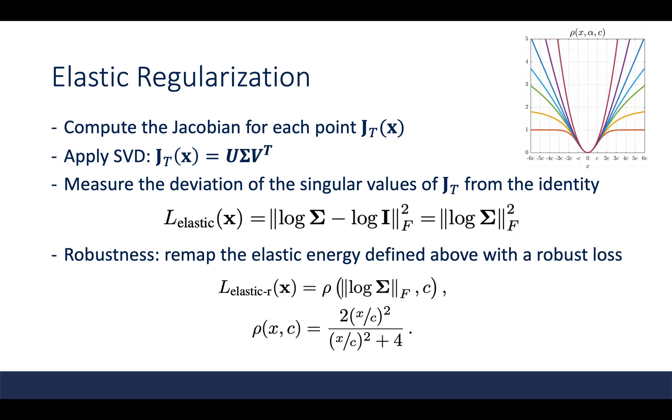Although humans are mostly rigid, there are some movements which can break our assumption of local rigidity, such as facial expressions which locally stretch and compress our skin. To further enhance the robustness, they choose to remap the elastic energy defined above using a robust loss function, where the ρ is the Geman-McClure robust error loss. This kind of loss function reduces the influence of outliers during training.